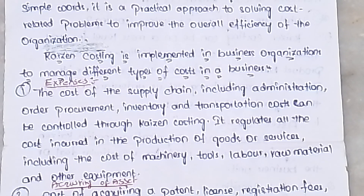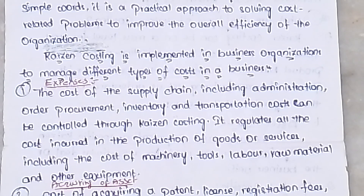This also covers production cost and inventory management. The cost of the supply chain is regulated — it regulates all costs incurred in the production of goods and services.